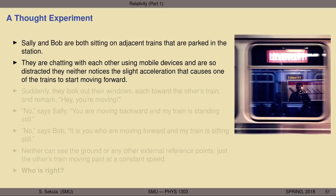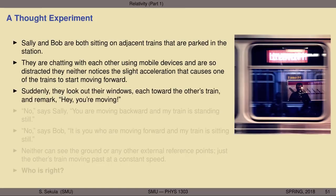They're so distracted with their conversation that neither of them notices the very slightest acceleration that suddenly causes one of the trains to start moving forward. Instead, they merely notice by looking out the windows at each other — suddenly realizing that somebody's moving — that one of the trains must be in motion, although they don't know which one because they didn't notice the acceleration. And so they each look out their windows and remark simultaneously on their mobile devices: 'Hey, you're moving.'